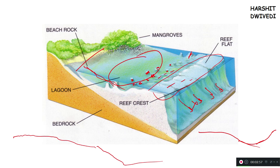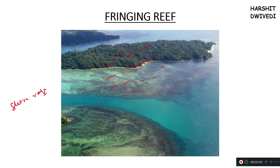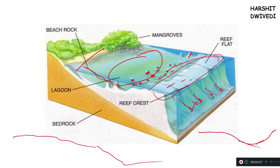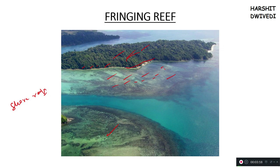In between the land and the reef there will be a shallow lagoon. These islands are small upward projections — the main reef structure is this, and because of this main reef structure, small coastal islands are coming outside which will be visible. So now you will be able to understand what fringing reef is. In the whole world, fringing reefs and shore reefs are the most common type of reefs available.